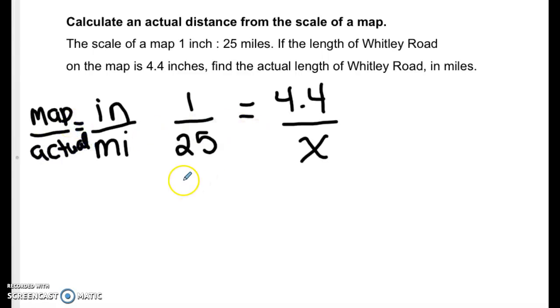Okay and now let's cross multiply. So 1 times x is x and 25 times 4.4 is 110. So the actual length of Whitley Road is 110 miles.